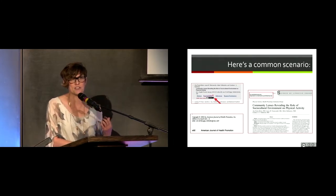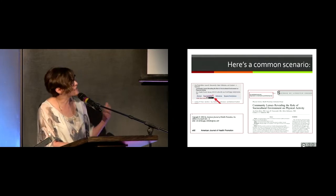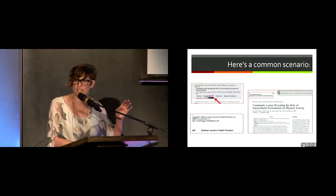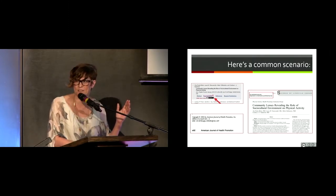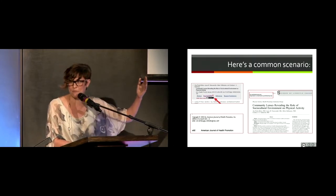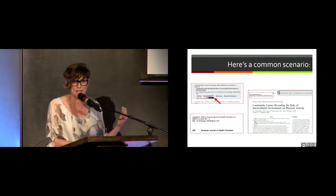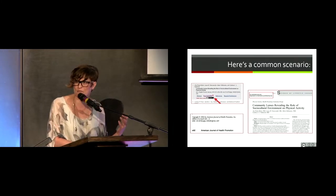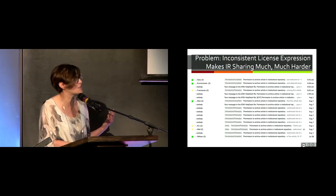Institutional repository managers make deposits in compliance with the contract law that they observe in the articles through a variety of review practices, and this scenario is really, really common. This is one paper that has a Creative Commons license on the table of contents, a very forbidding redistribution statement — actually saying redistribution is forbidden by law — as well as a copyright statement that has no reference to terms of use, period. So I can't deposit this, because I don't know what I should even put in my repository for what the copyright statement is for this article.